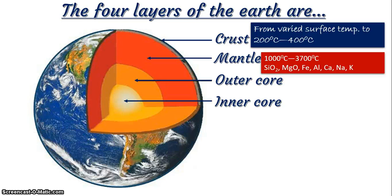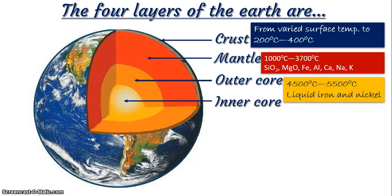How about the outer core? It gets hotter as we go deeper. The outer core has temperatures as high as 4,500 degrees Celsius to 5,500 degrees Celsius — quite hot. It's very important you notice the outer core is made of liquid, or molten, iron and nickel, with temperatures from 4,500 to 5,500 degrees Celsius.